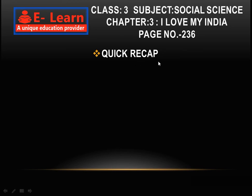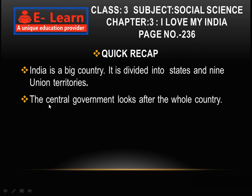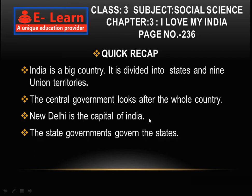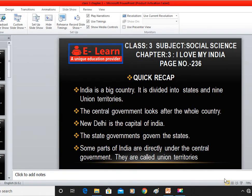Quick recap for the chapter: India is a big country divided into states and nine union territories. The central government looks after the whole country and New Delhi is the capital of India. The state governments govern the states, and some parts of India directly under the central government are called union territories. Thank you, students.